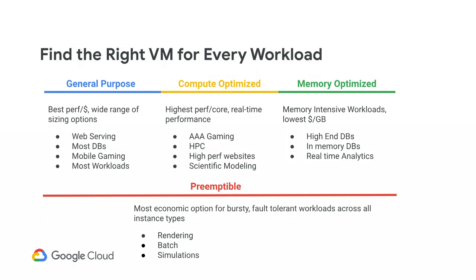We also talked about preemptible VMs, which is simply a flag that you can add to any VM type across the different types we talked about, regardless of your CPU, memory, and performance requirements. Once you add that flag, you automatically get the most economic option for bursty, fault-tolerant workloads. This is a great fit if you're running a rendering job, a batch job, or simulations that you just need compute for and don't mind if it gets preempted and continues to run again.